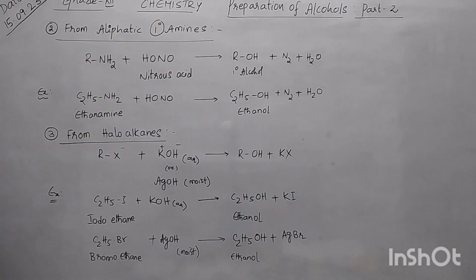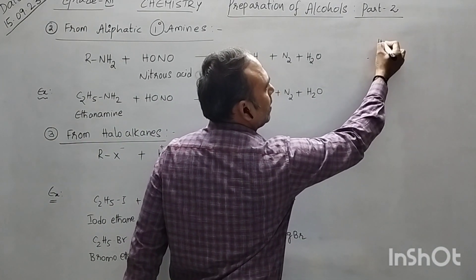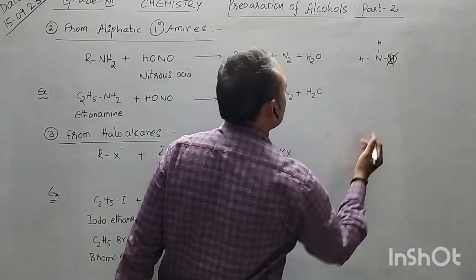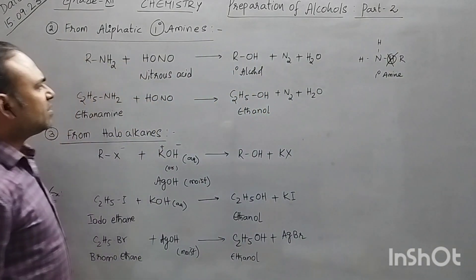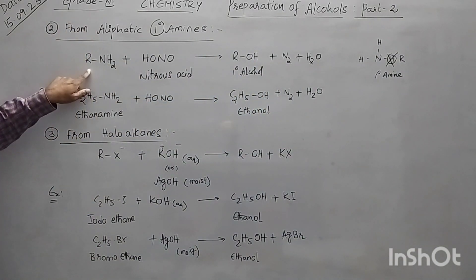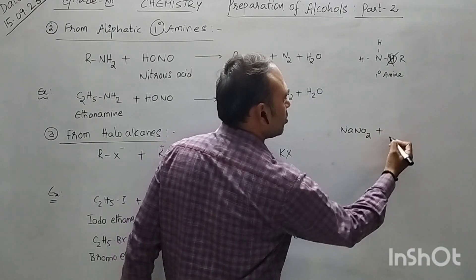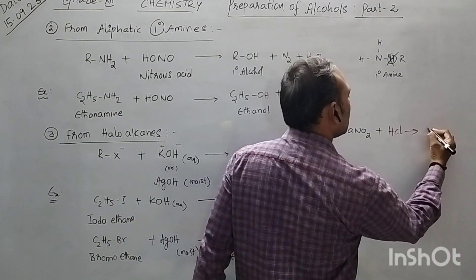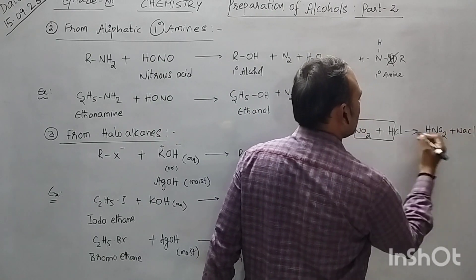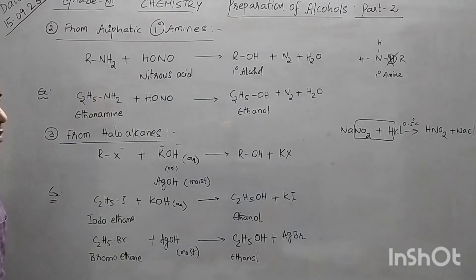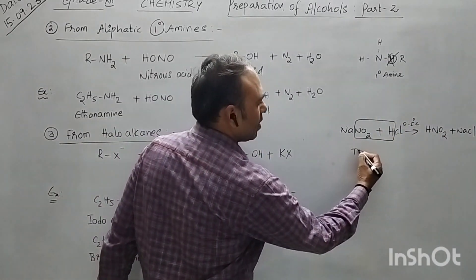We discussed about primary amines and aliphatic primary amines. If you take NH3 and one hydrogen is replaced with an R group, it will become a primary amine because it is a straight chain aliphatic compound. Now if you take aliphatic primary amine and react with nitrous acid — nitrous acid is prepared in-situ: NaNO2 plus HCl gives HNO2 plus NaCl. This reaction is carried out at zero to five degrees Celsius because HNO2 is highly unstable, so you prepare this product during the reaction, hence you call this an in-situ reaction.